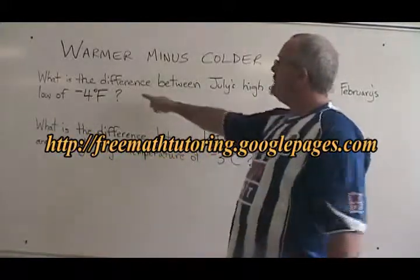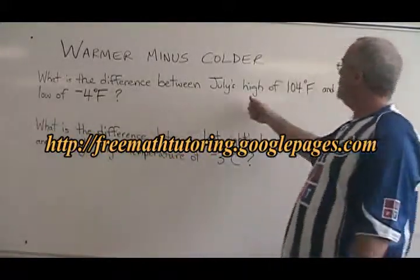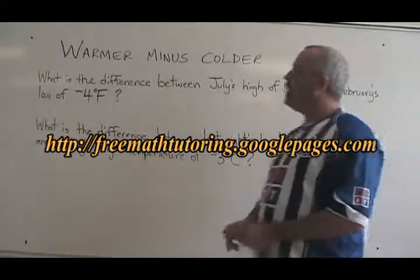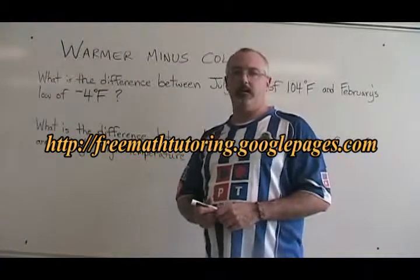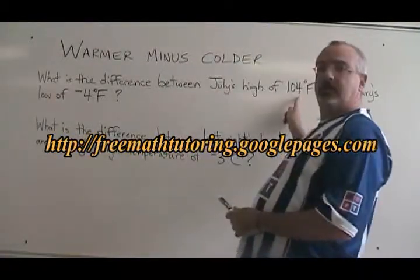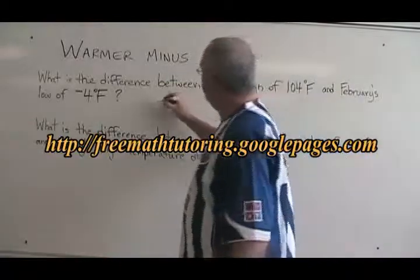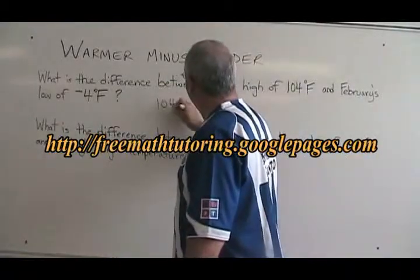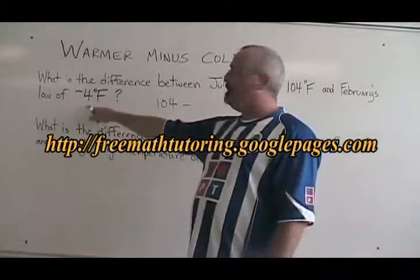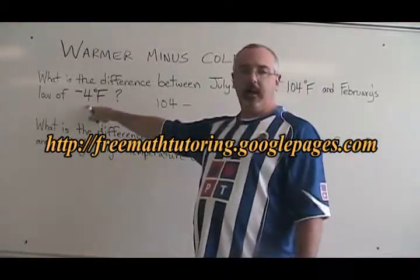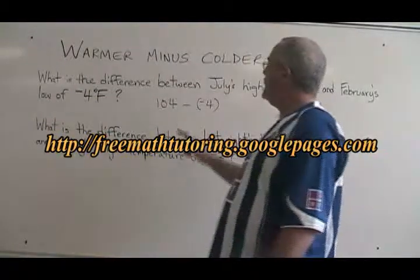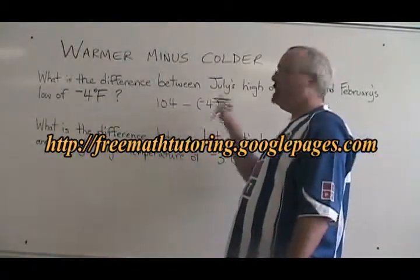The first question says: what is the difference between July's high of 104 degrees Fahrenheit and February's low of negative 4 degrees Fahrenheit? Warmer minus colder. The warmer of those two temperatures is 104, so I write 104. Then I put minus, and then I put the colder temperature, which is negative 4. I have to write a negative sign with it.